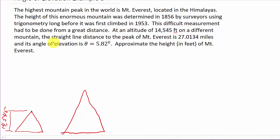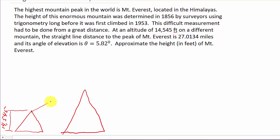And then it says the straight line distance to the peak of Mount Everest is 27.0134 miles. So that straight line distance to the peak, that means from here to here. This distance here was 27.0134 and this is miles. And this is feet.